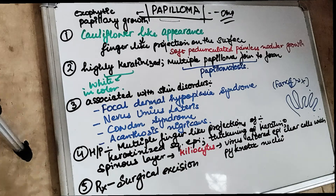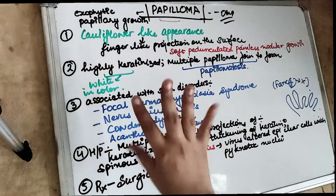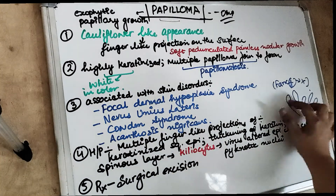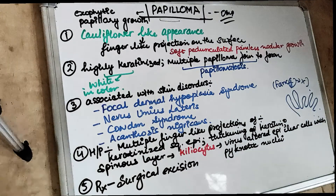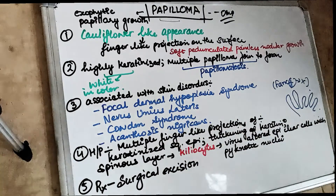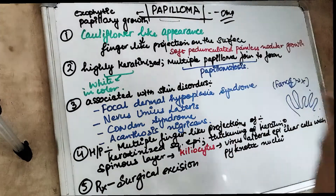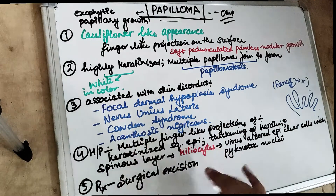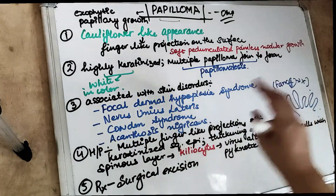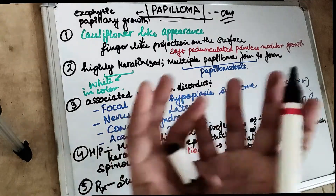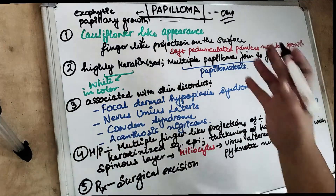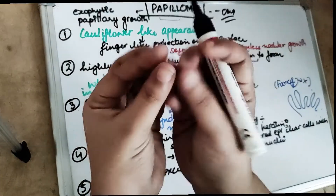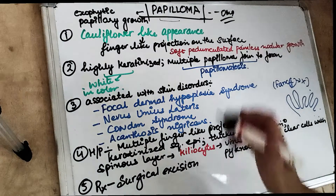A cauliflower-like appearance — basically, finger-like projections are seen on the surface. These finger-like projections are soft to touch. So when you see papilloma in the oral cavity, they are soft, pedunculated, painless, nodular growths. You can look up a picture — for example on the palate — and you will see the cauliflower-like growth characteristic of papilloma.